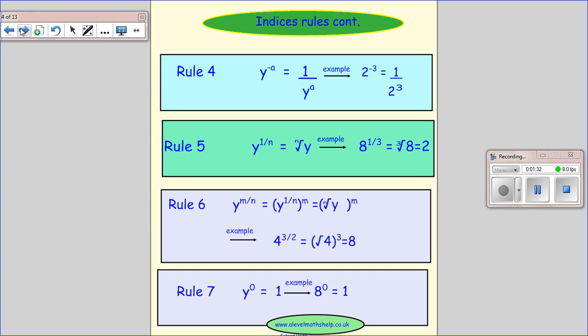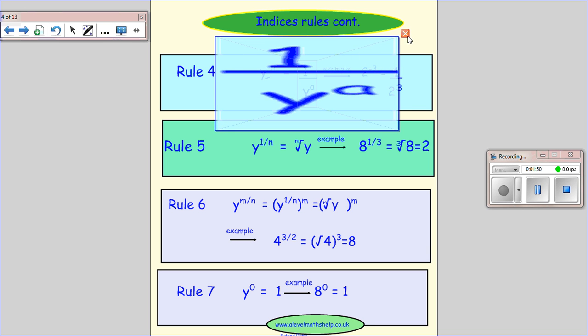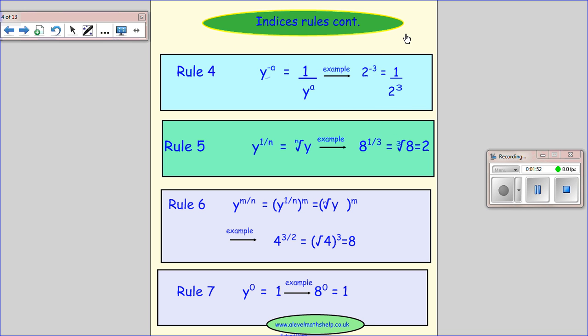On this slide we've got the new rules which come in for A level. The first one we have is y to the power of minus a. And what that does, that minus means that you take y to the power of a and you put it on the bottom of a fraction. So minus takes whatever you've got and you put it on the bottom of the fraction. So 2 to the power of minus 3 is the same as 1 over 2 cubed.